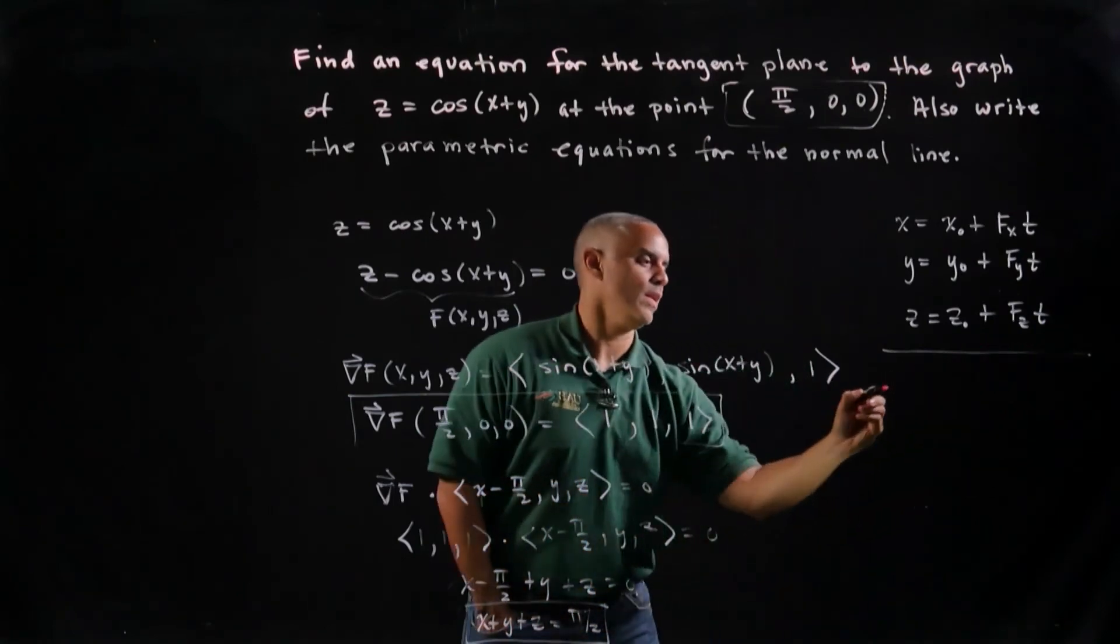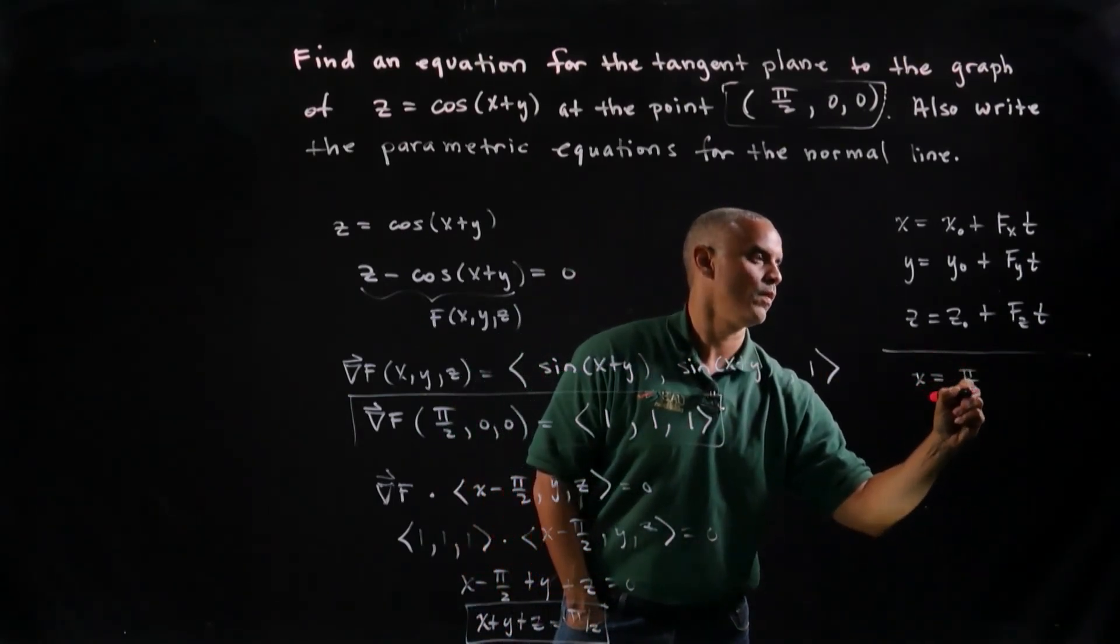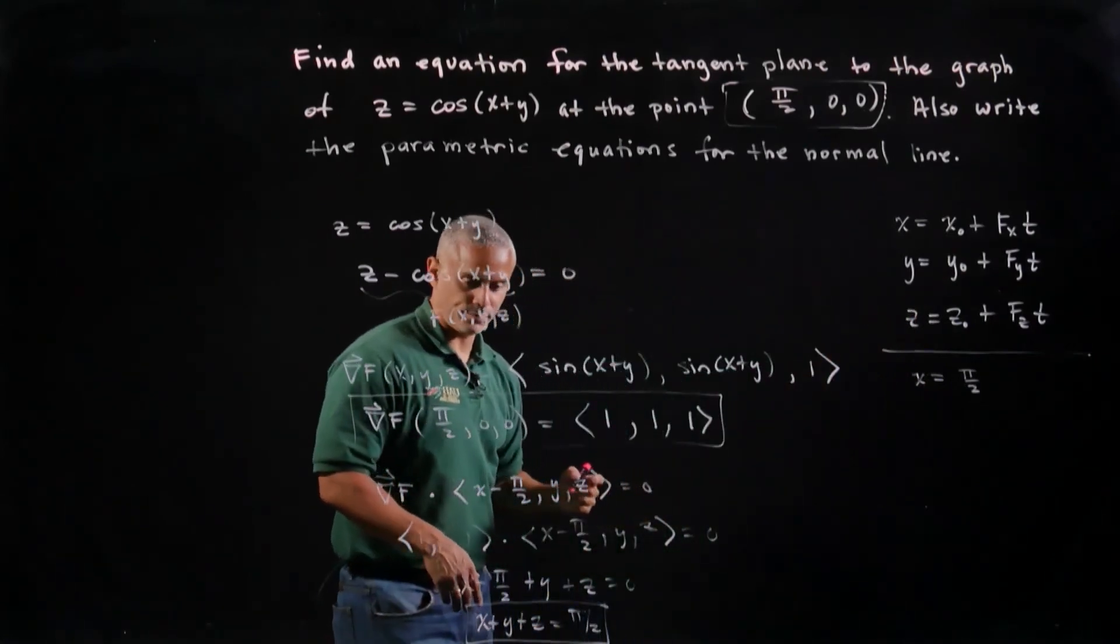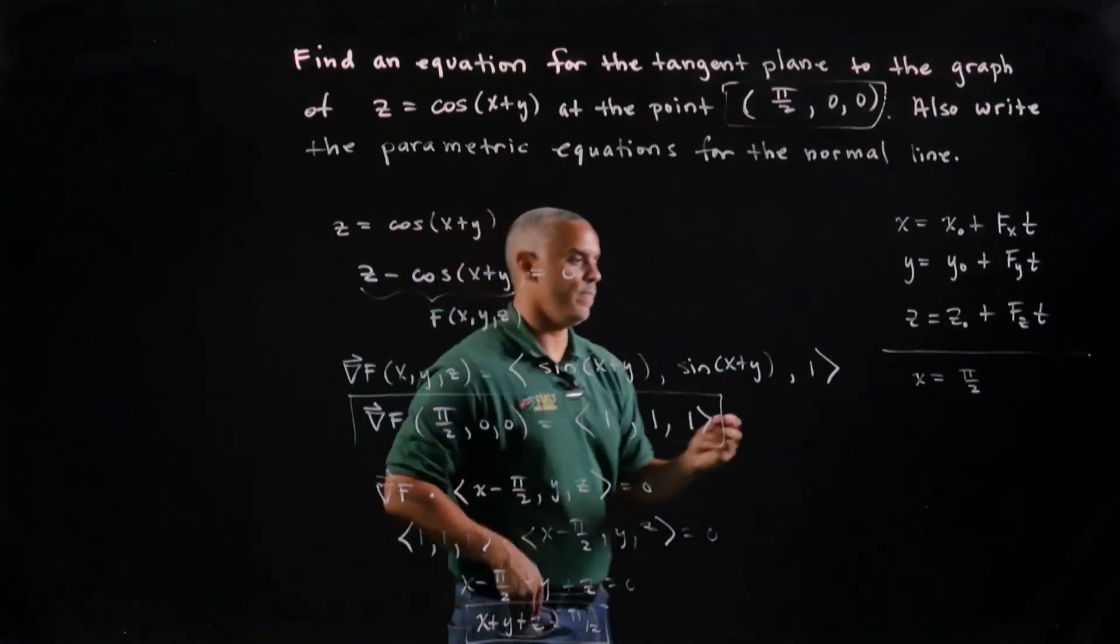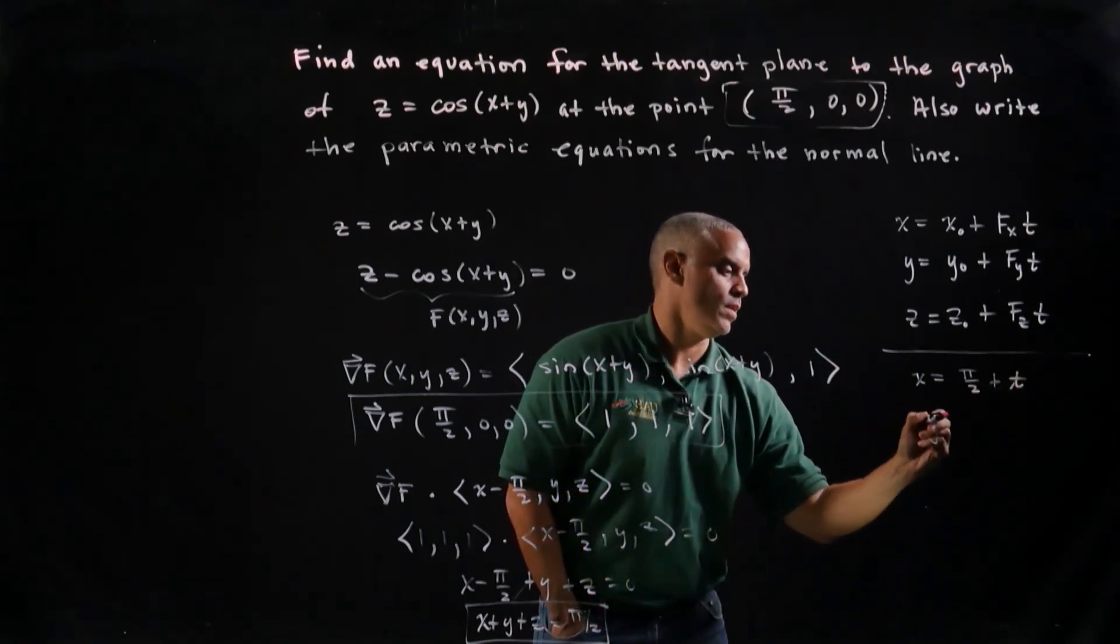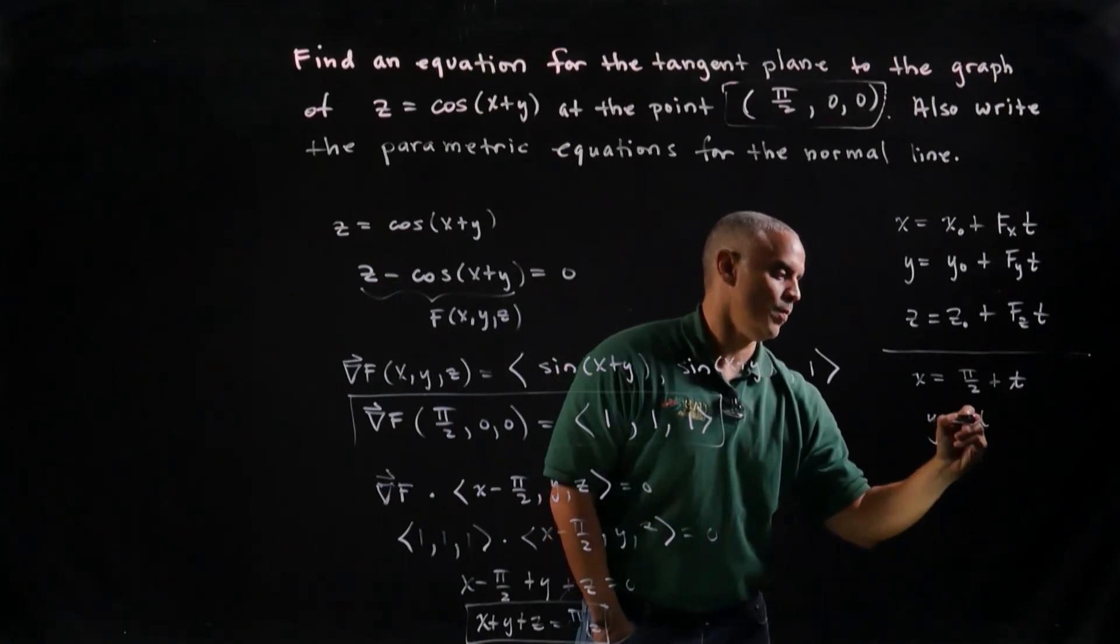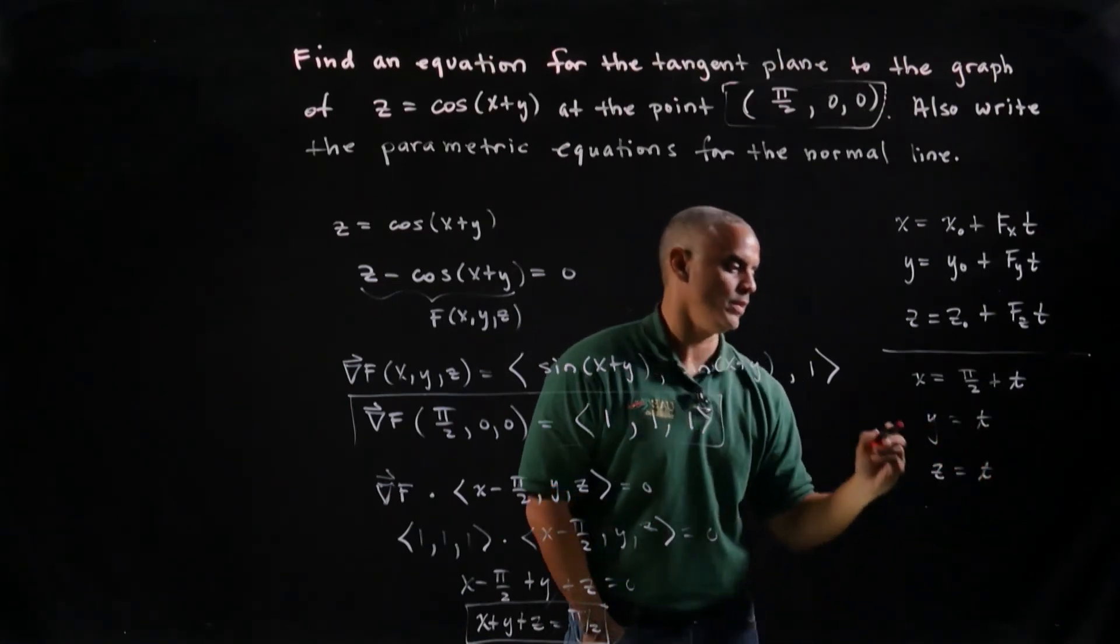So if I just want to write this out, I get x equals x naught is pi over 2 plus f_x, which is 1 times t. So I can write this as plus t. And since they're all 1, 1, 1, I get y now, which is 0 plus t, and z, which is 0 plus t.